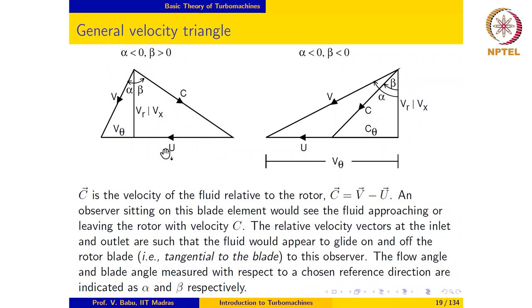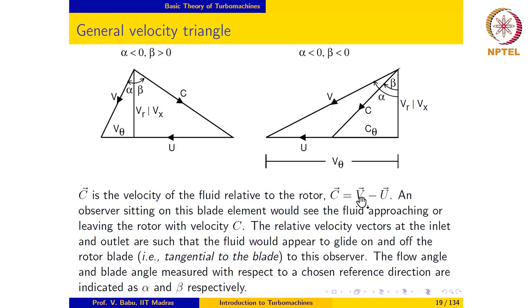We ended the previous lecture by introducing the concept of relative velocity of fluid with respect to the rotor, and we explore this concept further in this lecture. We start by writing down the formal definition: the relative velocity vector c is the absolute velocity vector v minus the blade velocity vector u. We may also write this as absolute velocity vector v equals relative velocity vector c plus blade velocity vector u.